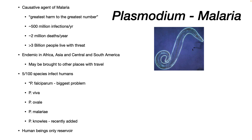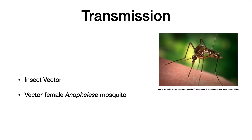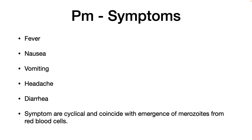Human beings are the only reservoir. The insect vector that transmits malaria from human to human is the female Anopheles mosquito.